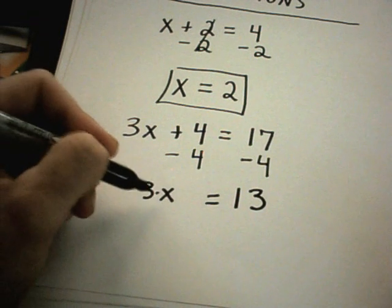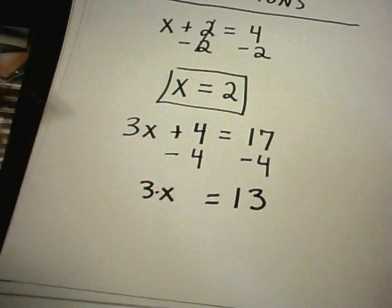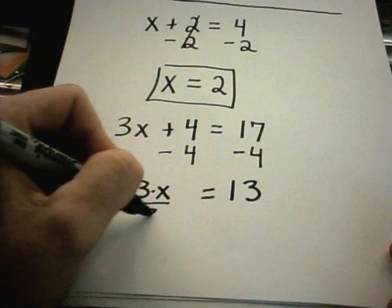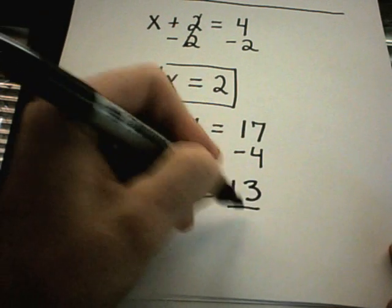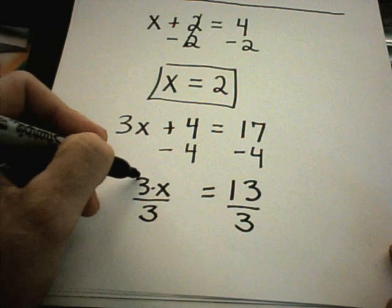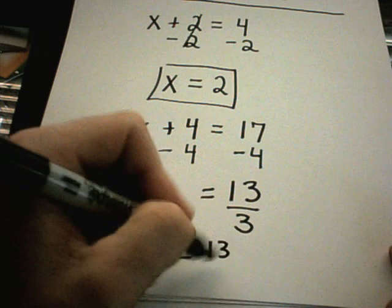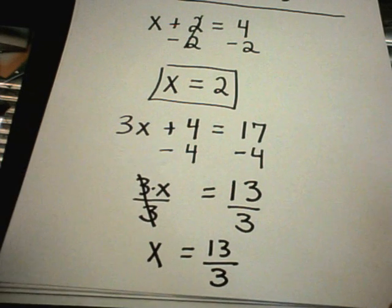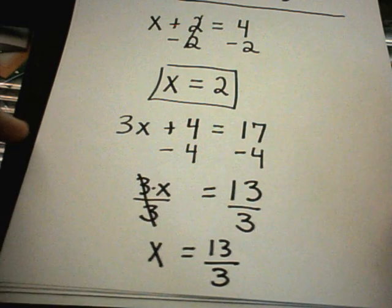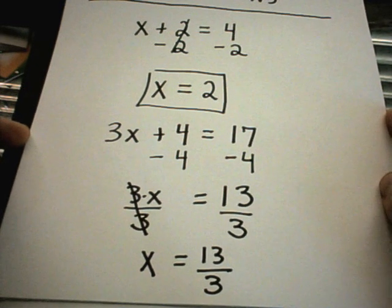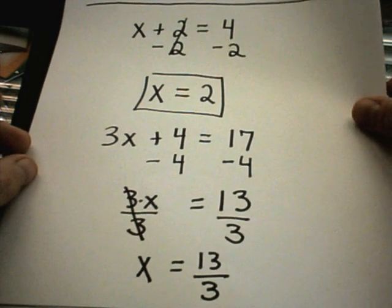And now I want to get the x by itself, but notice it's being multiplied by 3. Well, to undo multiplication, I do division. If you divide one side, you have to divide the other side as well. The 3s will cancel out, leaving you with just x equals, well in this case, 13 over 3. So not a nice whole number, but that's okay. There's no rule that says equations, the solutions have to be whole numbers.